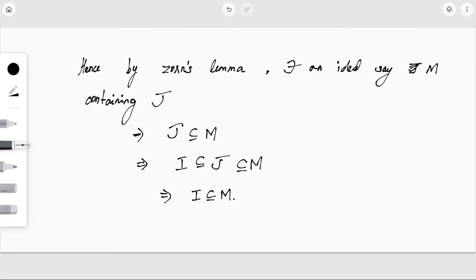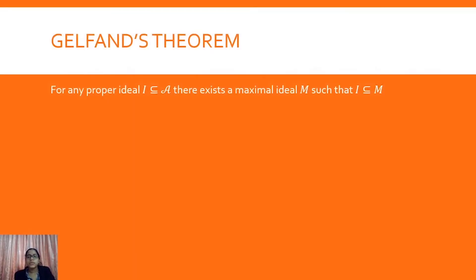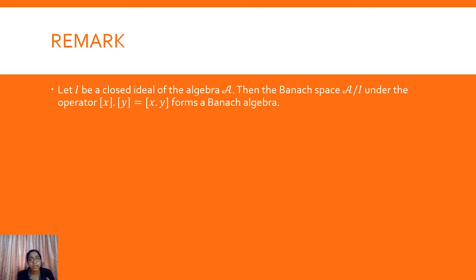There are a few corollaries you can work out on your own as they are simple and mentioned in the textbook. Now we shall discuss the quotient space. Suppose I is a closed ideal of the algebra script A. Then the Banach space A/I under the operation coset(x) · coset(y) = coset(xy) forms an algebra — in fact, a Banach algebra.